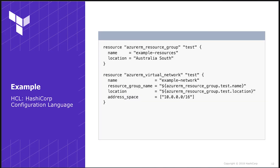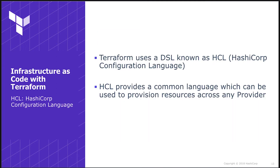Let's take a quick look. Here is some HCL. In this example, we create a resource group and a virtual network. We thread some variables through from one resource to the other, so we don't have to redefine them. HCL provides a common language that lets you work across any resource on any provider.